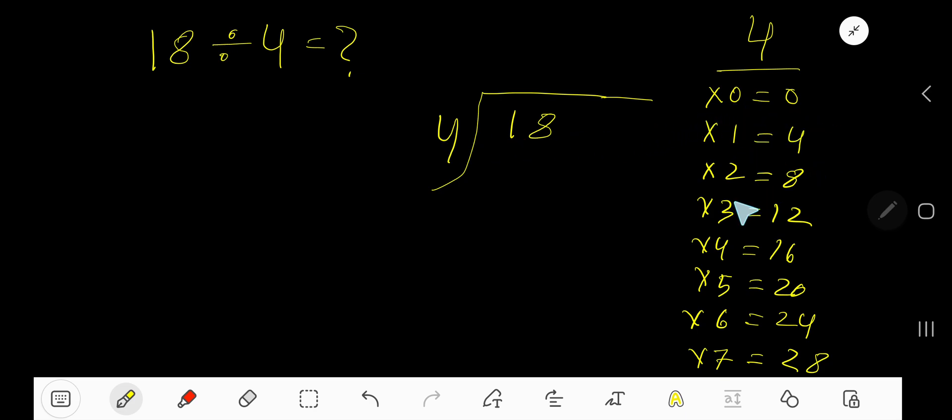4 times 0 is 0. 4 times 1 is 4. 4 times 2 is 8. 4 times 3 is 12. 4 times 4 is 16. 4 times 5 is 20. To find out the multiplication table of 4, just add 4 with the previous step.